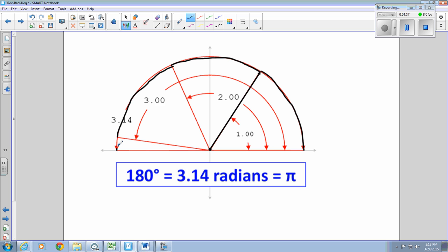And what's left over to make a semicircle is 0.14. That's why pi represents 3.14, or 180 degrees. 3.14 radius measures is pi. 3.14 radians is pi.